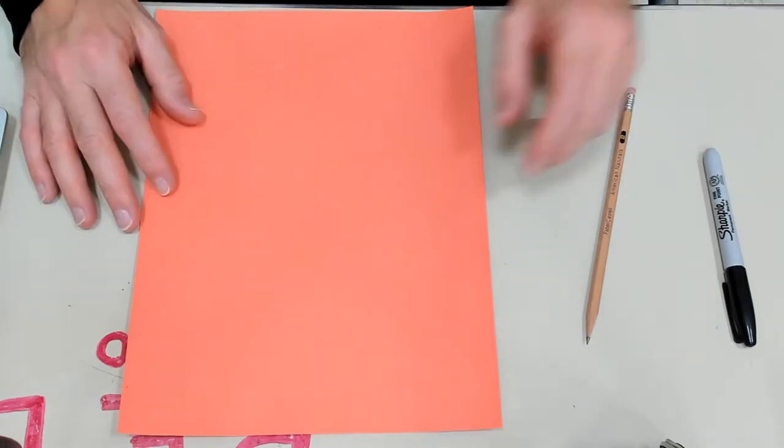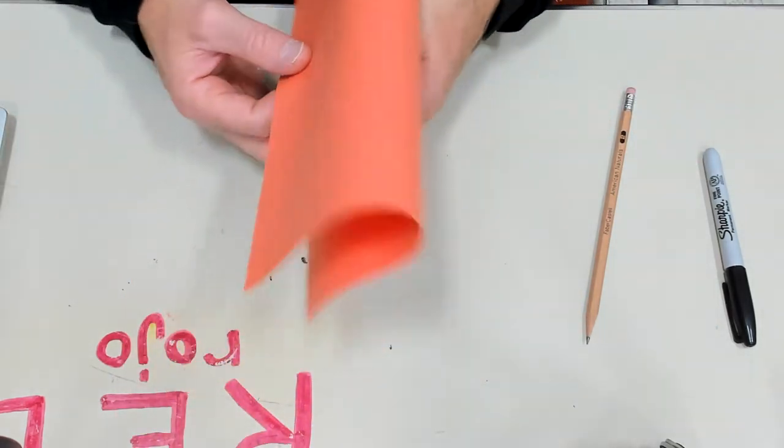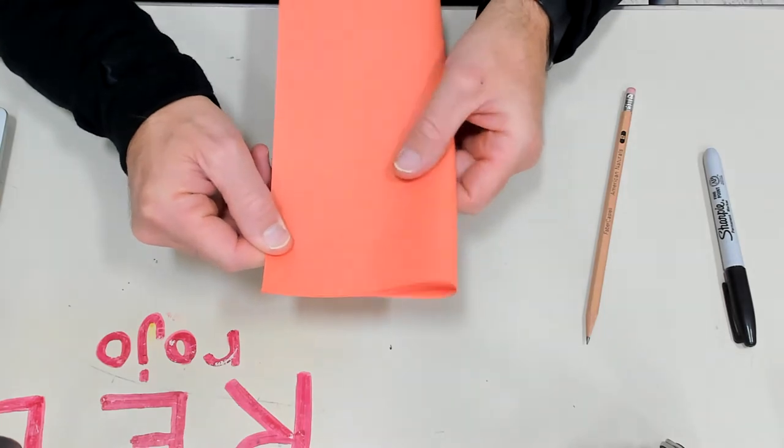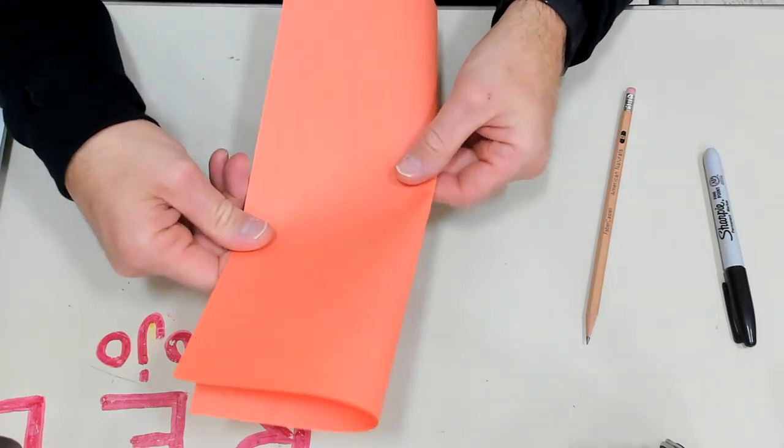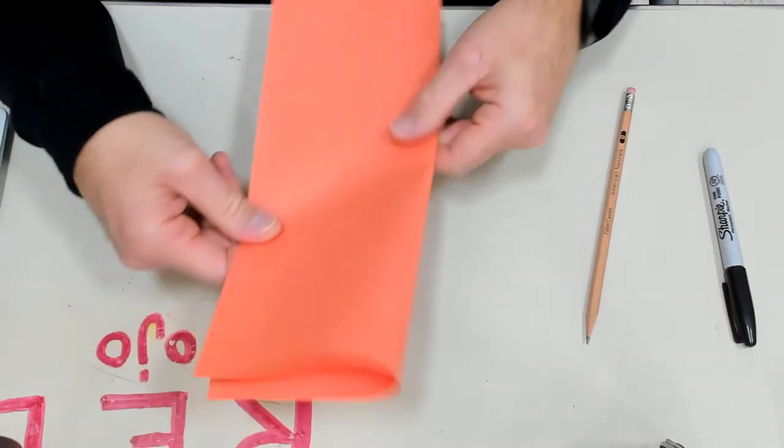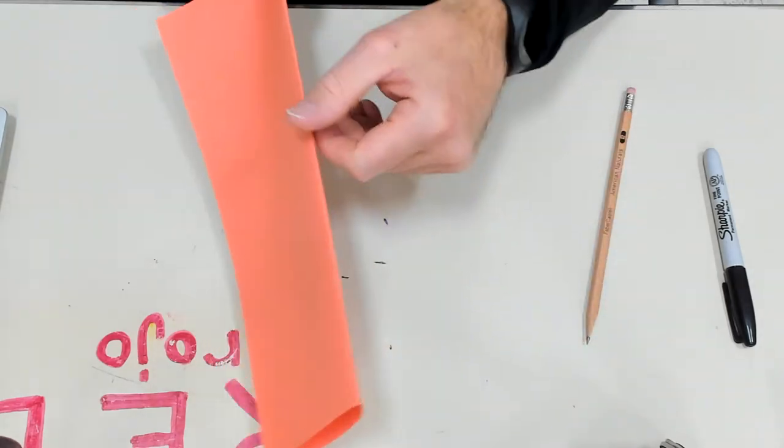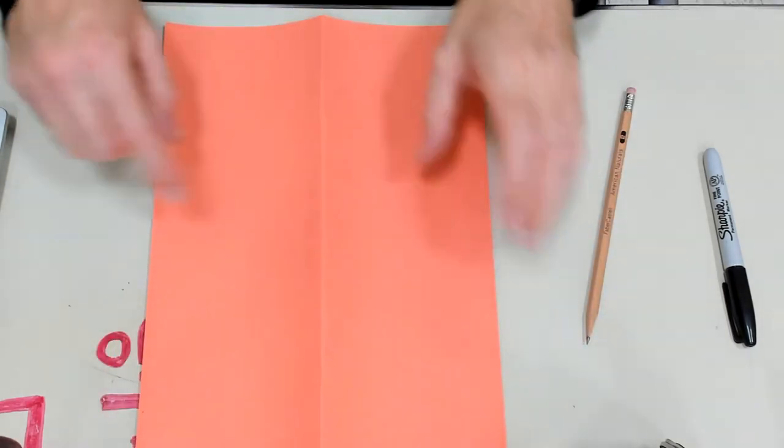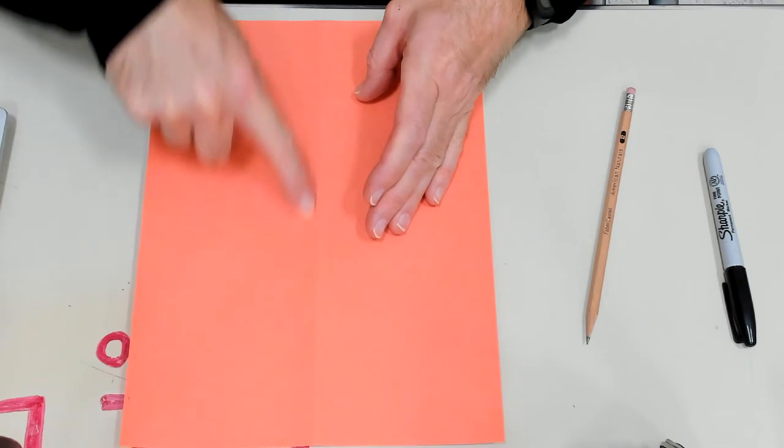First thing I want you to do is fold your paper in half. This is going to help us keep our drawings symmetrical. Don't fold it really hard, just so you can see where the center is. So here's the center of my paper right here.